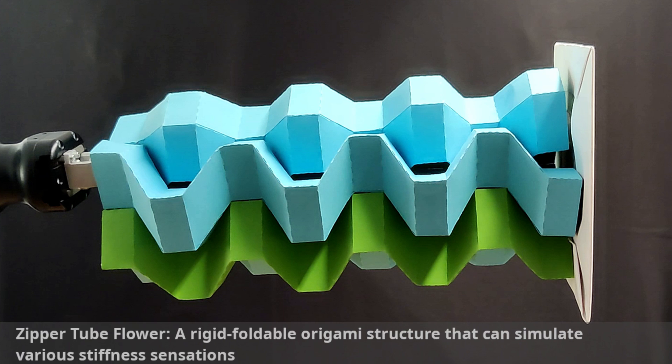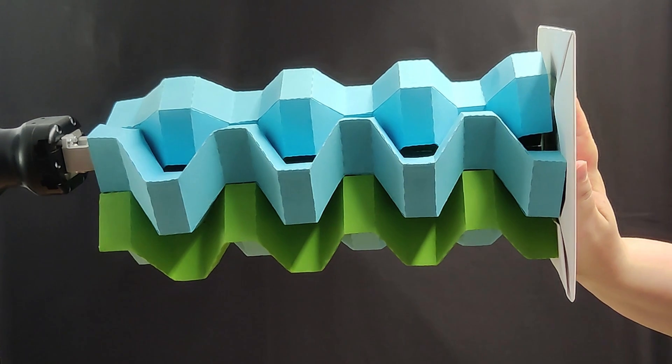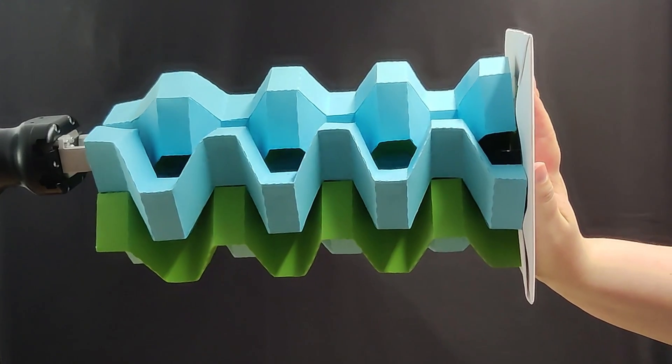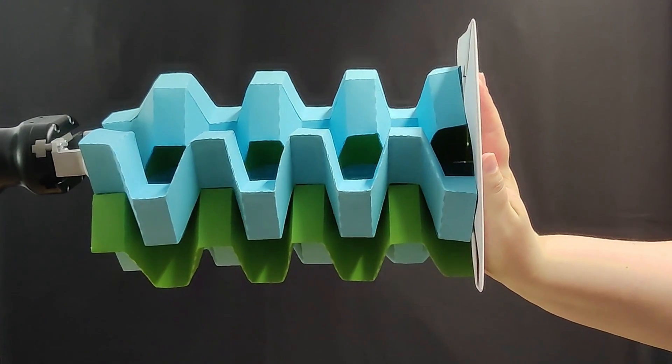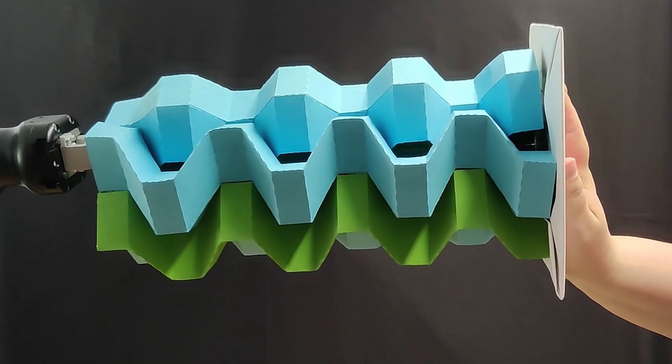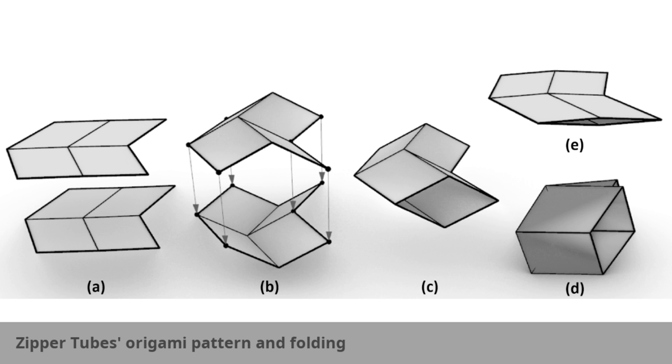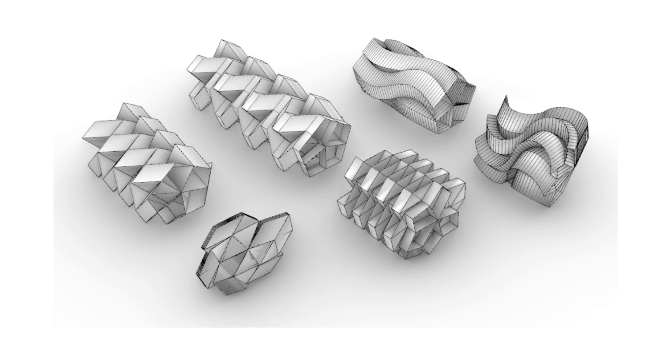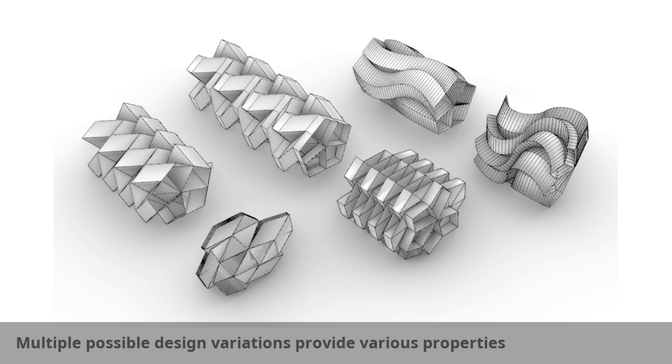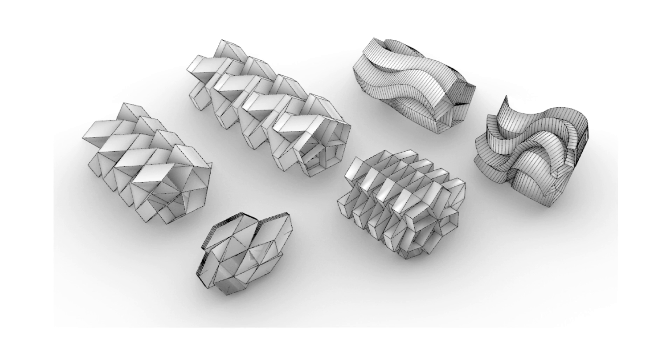Our second action origami-inspired haptic device is the Zipper Flower Tube. It is a rigid foldable origami structure that can provide different stiffness sensations to simulate the elastic response of various materials in virtual reality. Rigid foldable origami has many applications, as it can be materialized by flat panels and rotational hinges. Foldable tubes can be coupled in a zipper fashion to increase the stiffness of the resulting structure while they expand, which makes them robust enough for dynamic haptic feedback.